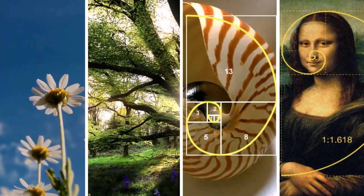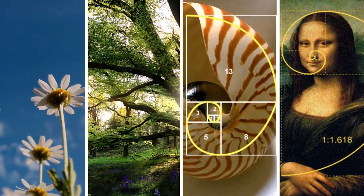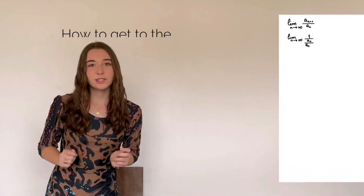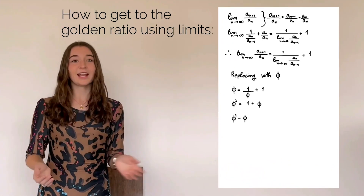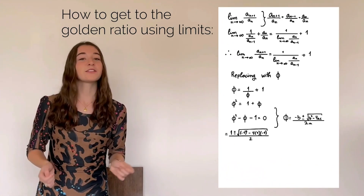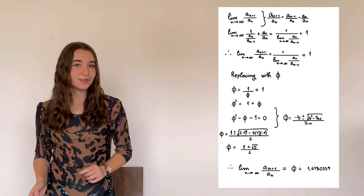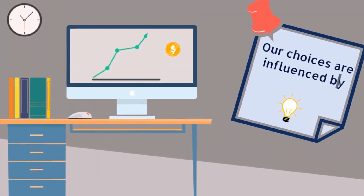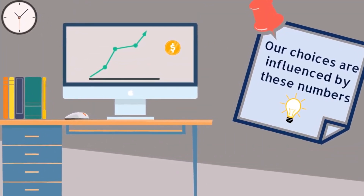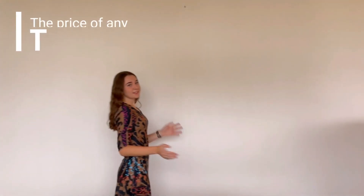These numbers are everywhere — in the number of petals in a flower, tree branches, shells, or art. Even using limits, you could get to the golden ratio by dividing a pair of consecutive Fibonacci numbers. They are related to what we consider beautiful, the way we think, and how we make investing decisions.